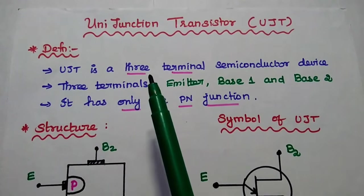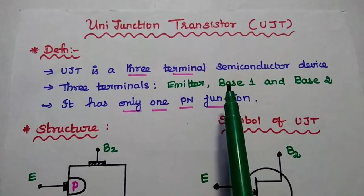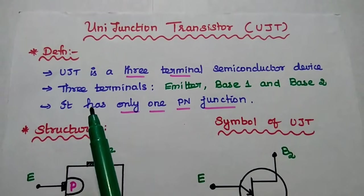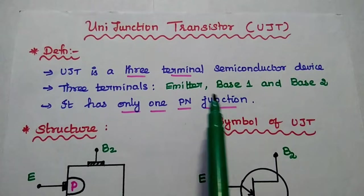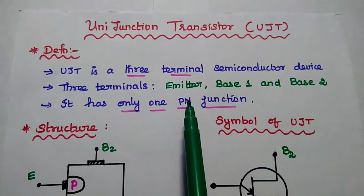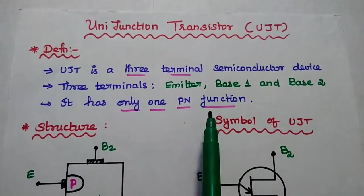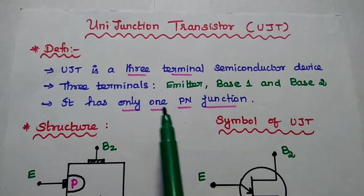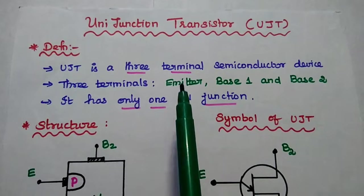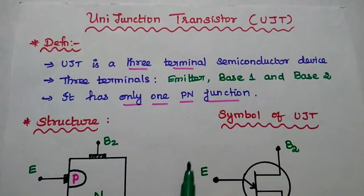Now we are going to discuss unijunction transistor and its characteristics in detail. UJT is a three terminal semiconductor device. The three terminals are emitter, base 1, and base 2. It has only one PN junction. Since it has only one PN junction and three terminals, it is called as unijunction transistor.